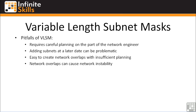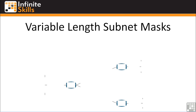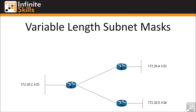The biggest pitfall of VLSM, in my opinion, is that it is very easy to create network overlaps if you don't plan properly. These network overlaps cause network instability, and this all ties back to careful planning and adding subnets at a later date. Now some of you new to networking might ask, what do you mean by network overlaps? Let's look at another diagram — I love my diagrams. Just wait until we get into the router labs and you see some of the labs I've set up inside GNS3.